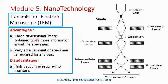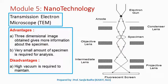An advantage of the transmission electron microscope is that a three-dimensional image can be obtained, because the electron beam passes from one end to the other end — it does not just give the image of the surface but the inner picture is also clear. So a three-dimensional image can be obtained, which gives more information about the specimen, and only a very small amount of specimen is required for the analysis.